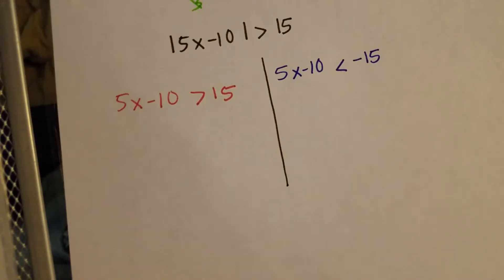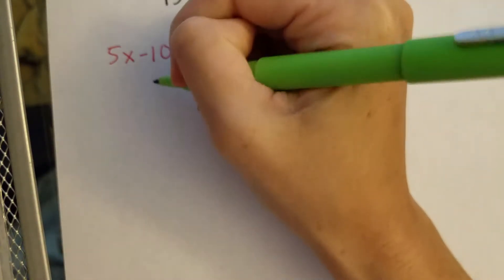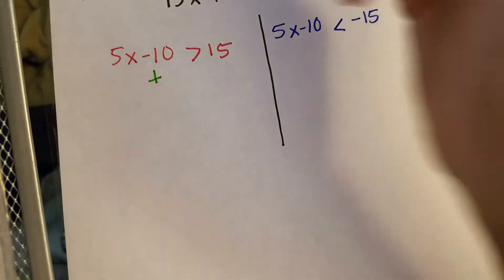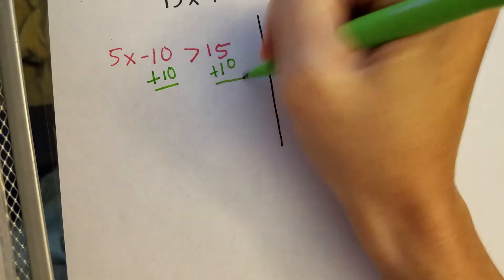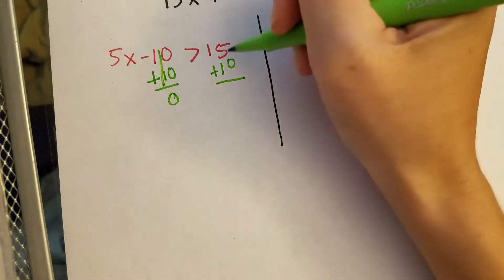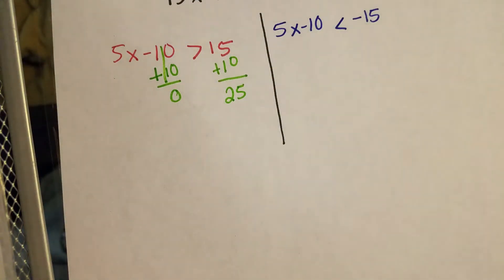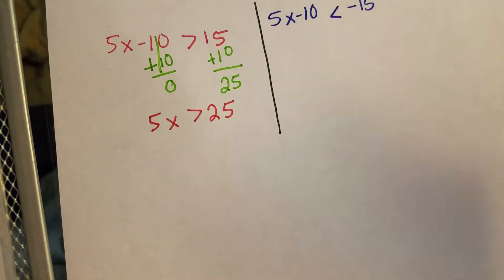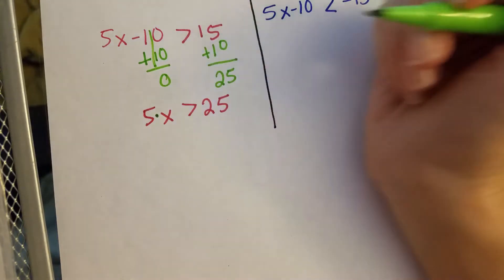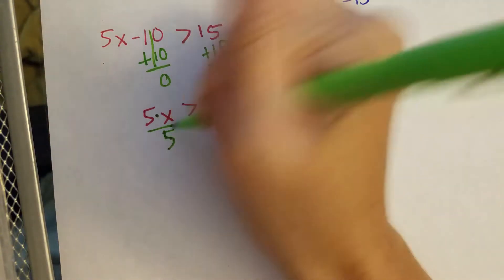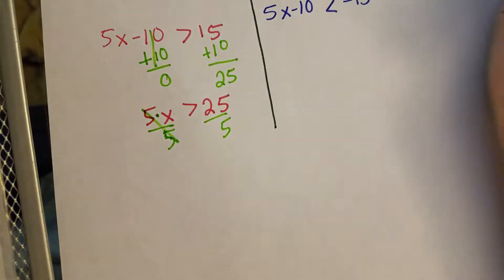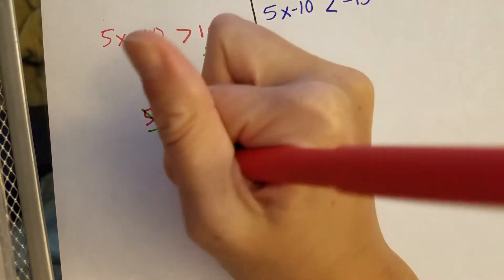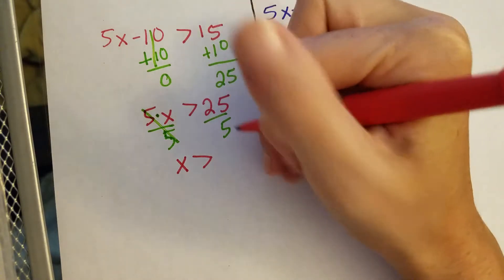From here we get X by itself. I bring negative 10 to the other side by adding positive 10 to both sides. On the left it cancels to zero; on the right, 15 plus 10 gives me 25. So we have 5x is greater than 25. Now to get X by itself, 5 is multiplying the X, so the opposite is division — divide both sides by 5. Five divided by 5 cancels, leaving X is greater than 25 divided by 5, which is 5.